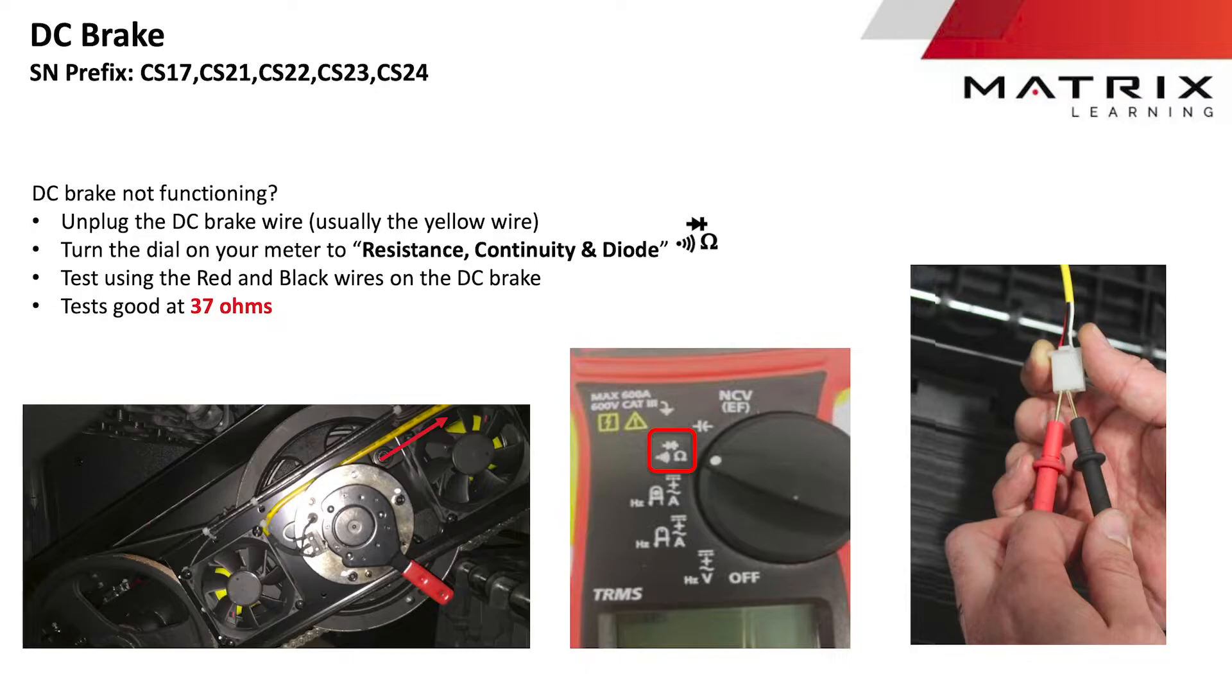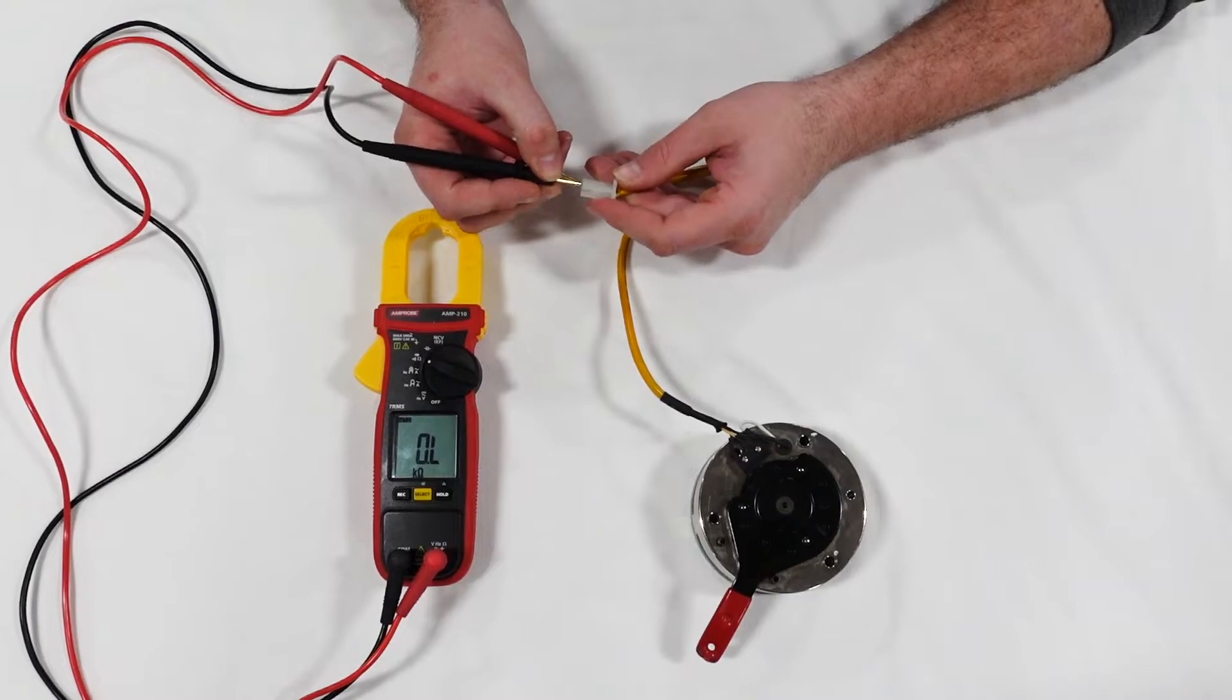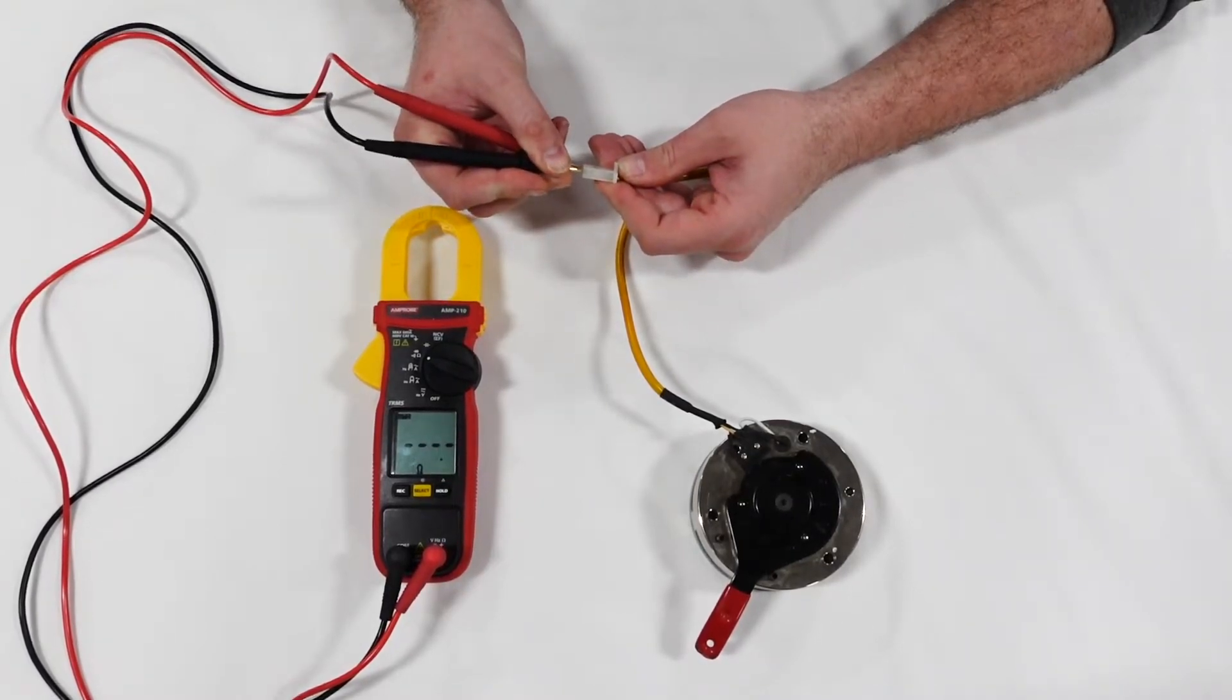If you have climb mill models CS17, 21, 22, 23 or 24, the resistance value on the black and red wire should be close to 37 ohms.